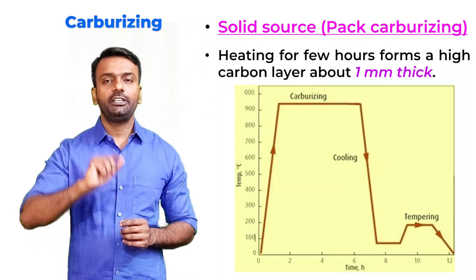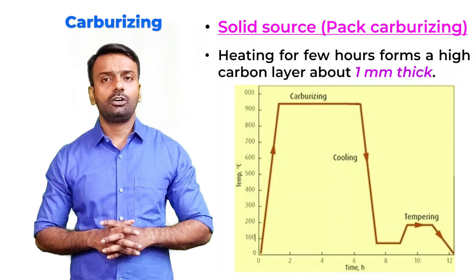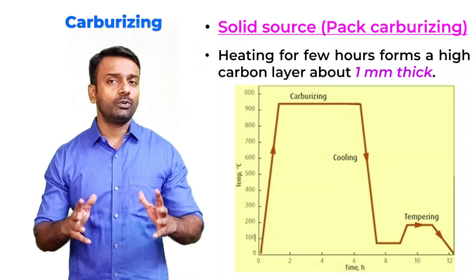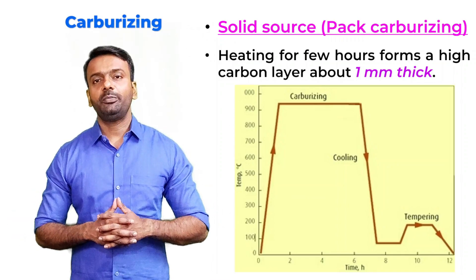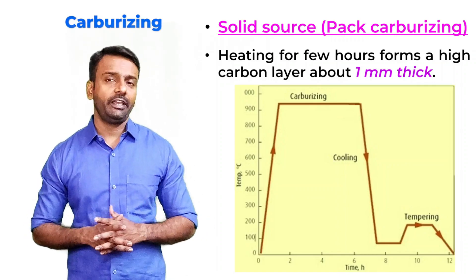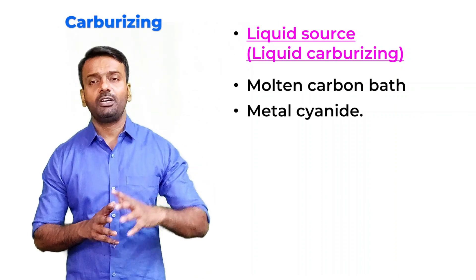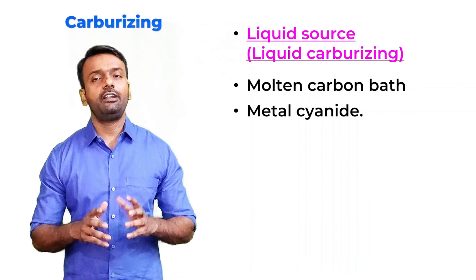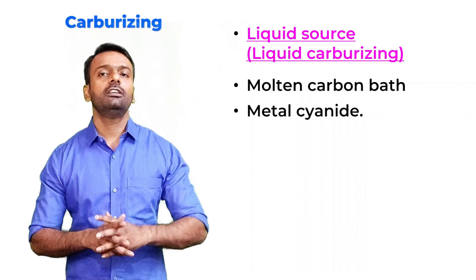In the carburizing cycle, steel is heated above 900 degrees centigrade into the austenite phase and held there for a certain amount of time, giving around one millimeter of case thickness. Then it is quenched, followed by a tempering heat treatment to relieve all stresses. The whole cycle of carburizing can take about eight hours. For liquid carburizing, the sample is kept in a molten carbon bath, generally a metal cyanide which serves as the carbon source, and diffusion occurs at elevated temperature.